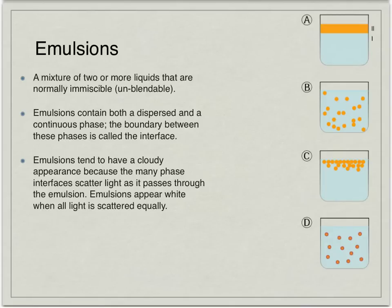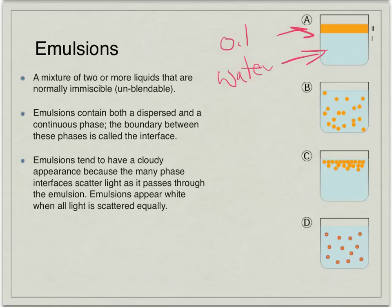Emulsions are kind of interesting. An emulsion involves two or more liquids that normally don't mix — the easiest example is oil and water. Those two layers are going to sit on top of each other, but in an emulsion they've been dispersed across the interface. So this is taking that oil, shaking it up, and getting those oil particles dispersed through the water.